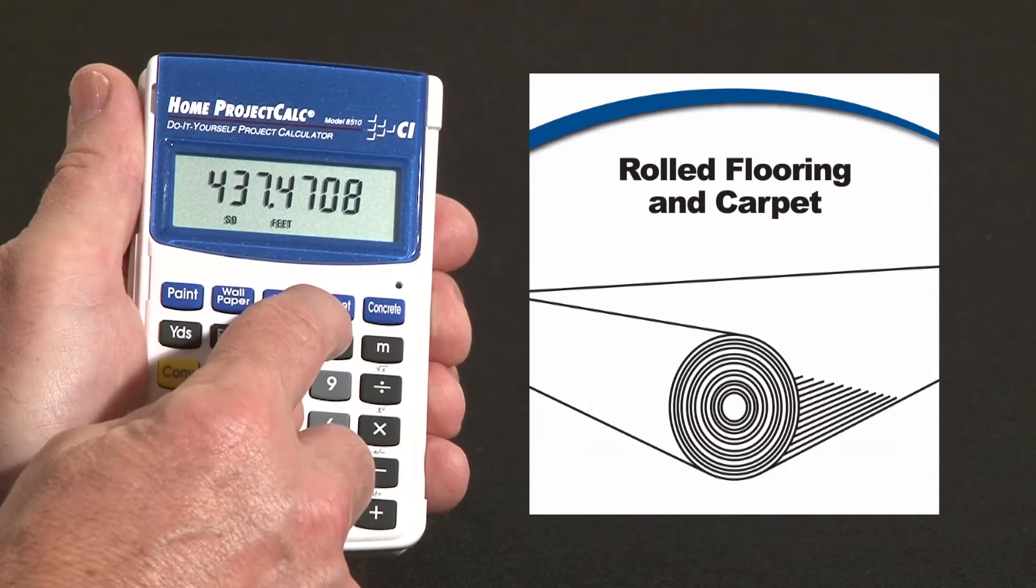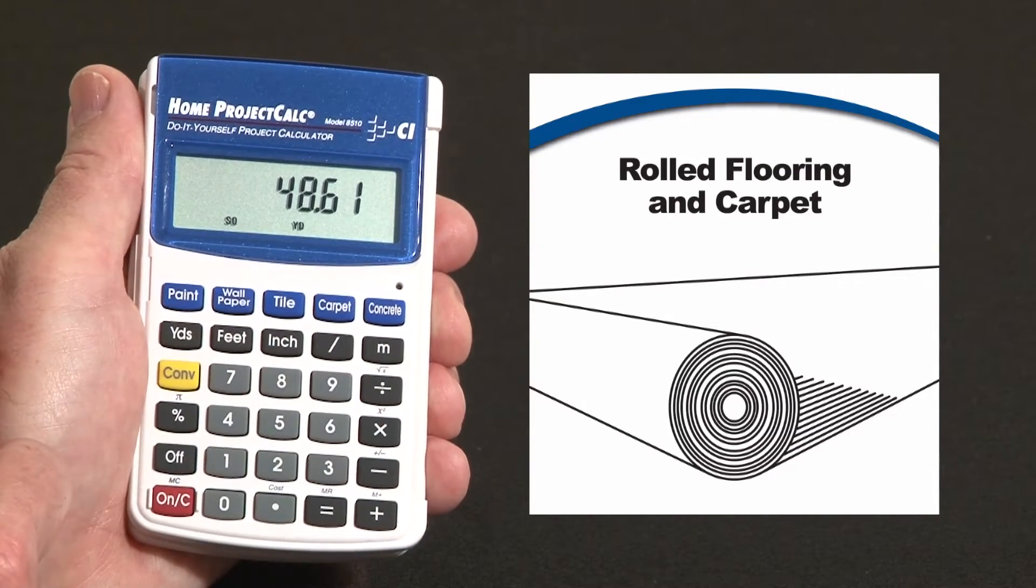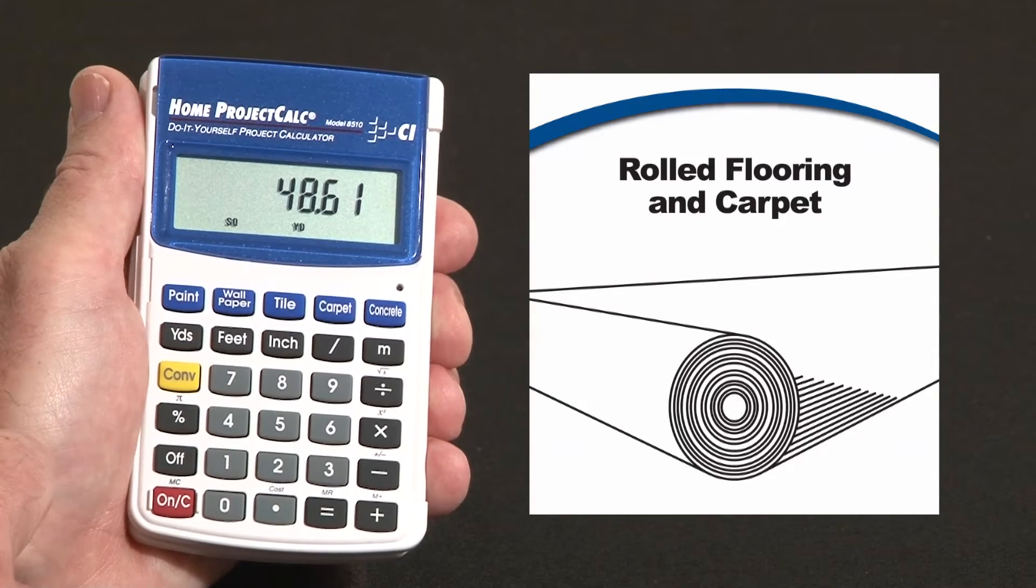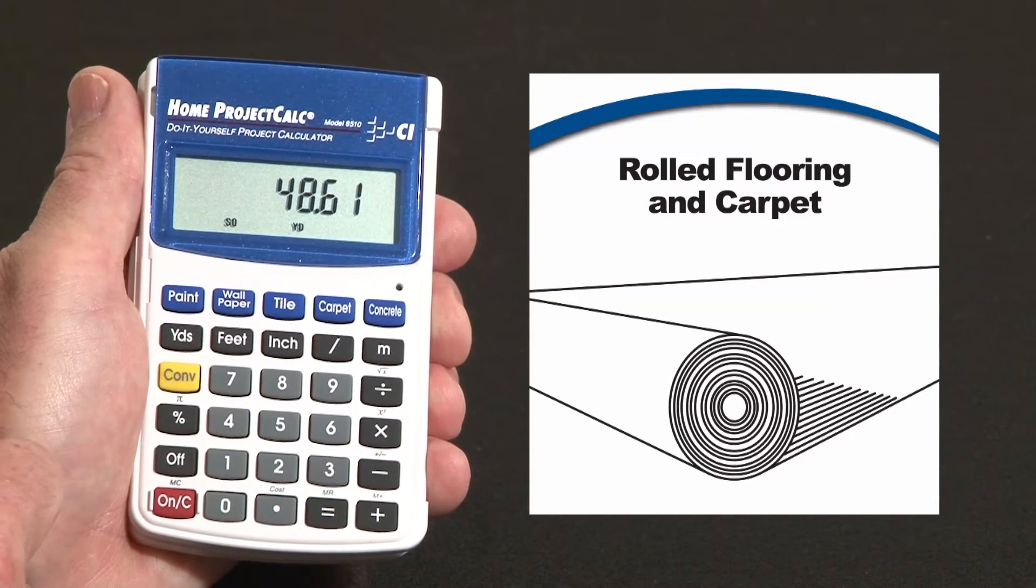So now we just hit the carpet key. The first press converts that to square yards, so we need about 48 or 49 square yards of carpet or flooring.